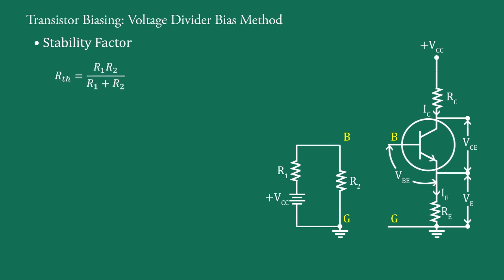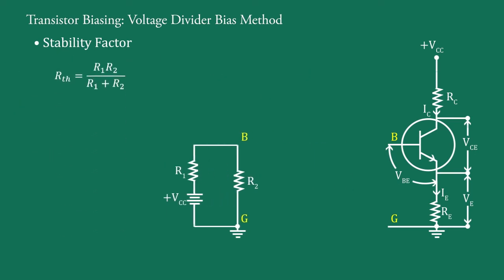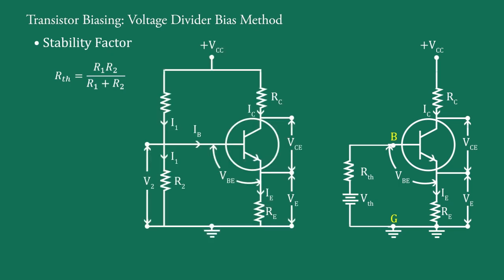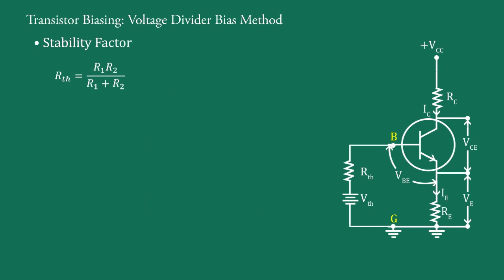Thus, according to Thevenin's theorem, this circuit network is drawn like this. Now, if you connect this network between B and G like this, then this original circuit and this Thevenin's circuit have no difference as per Thevenin's theorem.